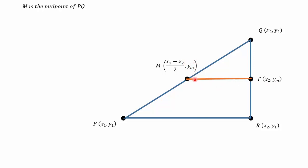So M is the midpoint of PQ. That means QM to QP must be equal to 1 over 2 parts because M bisects QP. And MT is parallel to PR.